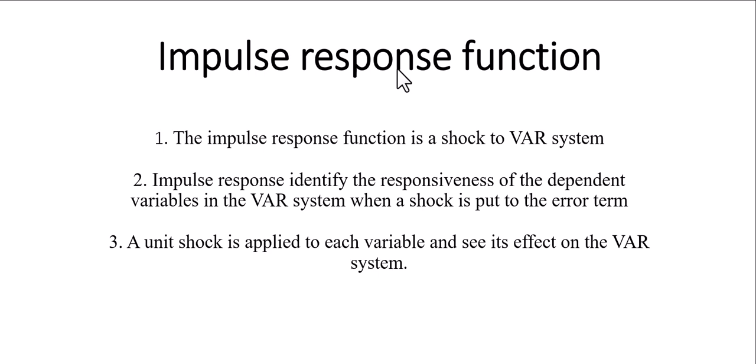First of all we will discuss what is the impulse response function. Basically the impulse response function is a shock to a VAR system — VAR meaning vector autoregressive model or vector autoregressive system. In our previous lecture we already discussed how to apply VAR, as well as restricted VAR and unrestricted VAR, which is also called the vector error correction model, VECM. But now we are discussing about impulse response function.